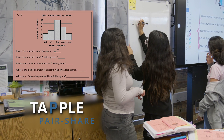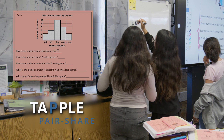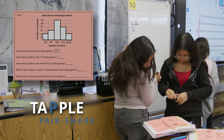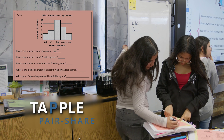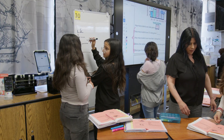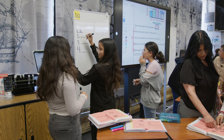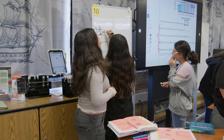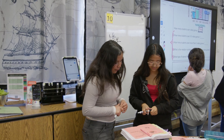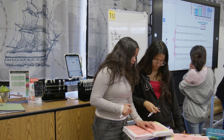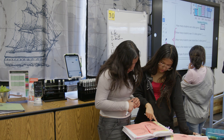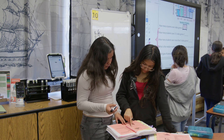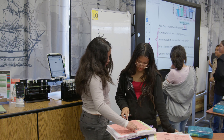Number two: how many students own five video games? It's 24. Not counting — it's three to five, and you don't know how many students have exactly three. So what is the median of the students who own video games? Don't count this one.